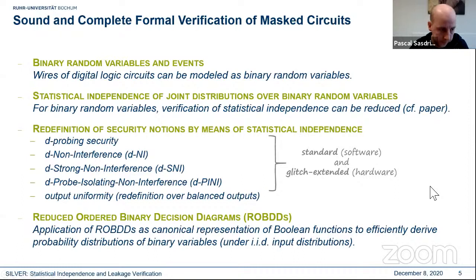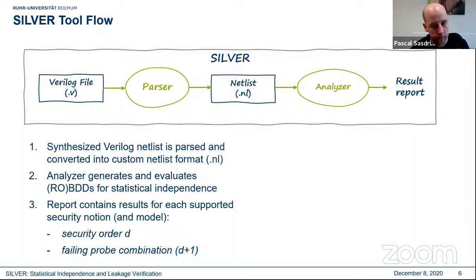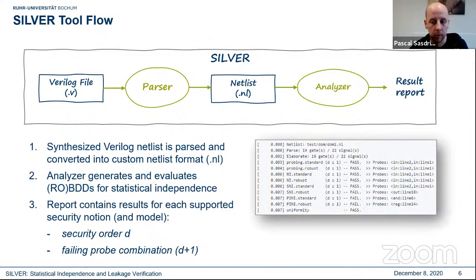What we then did is, using the redefinition of all state-of-the-art security notions, based on statistical independence, we could verify security for a standard and a software-like, so a standard, a software-like and a glitch extended hardware-like leakage model. And for all this, our verification approach heavily relies on the data structure of reduced ordered binary decision diagrams to store Boolean functions, and that allows us to efficiently derive the probability distributions of binary random variables. So eventually, combining all this into our tool, we can work on a synthesized Verilog netlist, which is first parsed and converted to some intermediate and custom netlist format. And this file then is used to generate the BDDs, and the analyzer evaluates the various security notions based on statistical independence of intermediate and secret values. So as a result, as you can see on the right side, the report will provide the maximum security order for each security notion that we analyzed, and also for each leakage model, as well as the first combination of probes that failed for the given test.